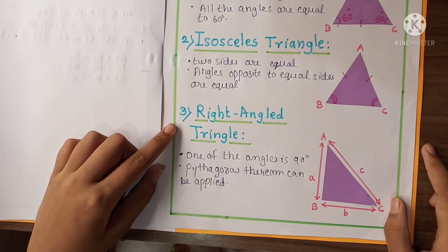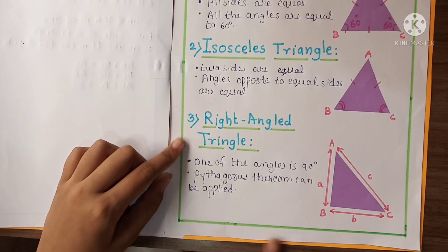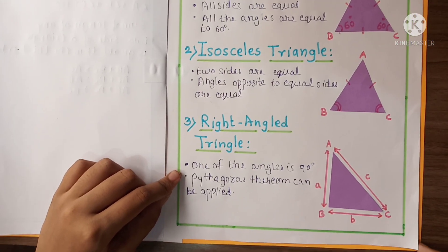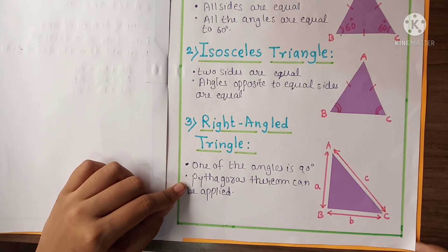Third one is right angle triangle. Here is the diagram of right angle triangle. First point is one of the angles is 90 degree. Second point is Pythagoras theorem can be applied.